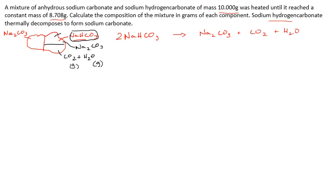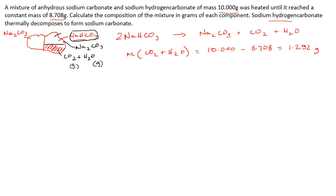The difference in mass is the bit that's lost because the gases escape. So the mass of the carbon dioxide and water equals our starting mass of 10 grams minus our finishing mass of 8.708 grams, which is 1.292 grams. That's the mass of those two products.